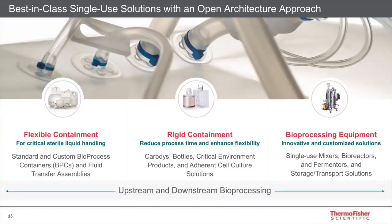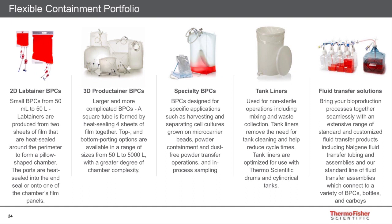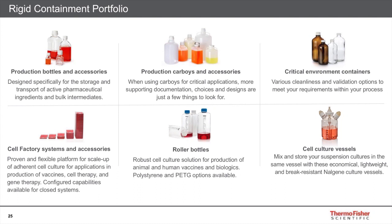We now have an extensive range of materials that can be used in an open architecture approach for flexible containment, rigid containment, and supporting bioprocess equipment. We have two-dimensional and three-dimensional standard bioprocess containers, specialty containers for particular applications, a range of liners, and fluid transfer assemblies for transferring materials from media makeup into the production vessel. We also have rigid containment systems for media makeup, sample prep, and transition of materials.